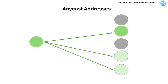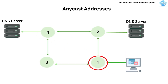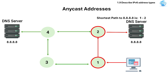Then we have Anycast address. This is an IPv6 address assigned to multiple devices, but traffic is routed to the closest device. It's like one address, multiple destinations, but the nearest one responds. For example, DNS servers around the world might all share the same Anycast address, and a request will be routed to the nearest DNS server.